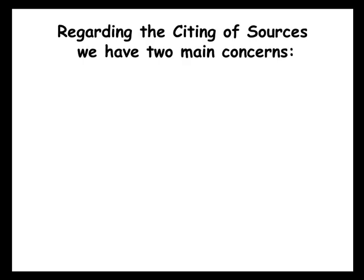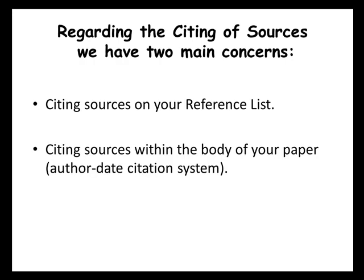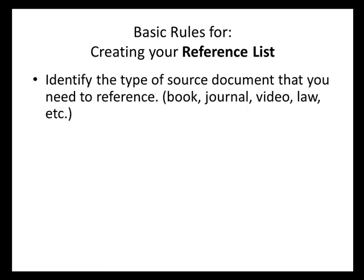There are two main concerns for the purposes of our presentation: citing our sources from our academic papers in the reference list, and citing sources within the body of our paper. These are the basic rules you should keep in mind for constructing a reference list. This is the template that will be followed for all APA style citations. We need to identify the type of document we are using — most likely a book, a journal article, but occasionally a law or a website.